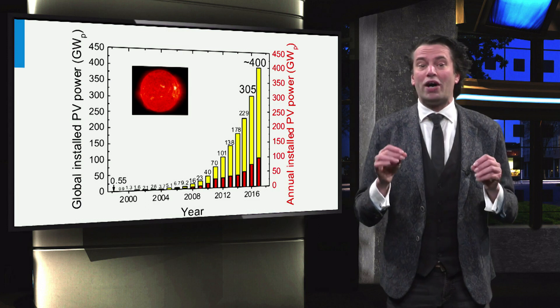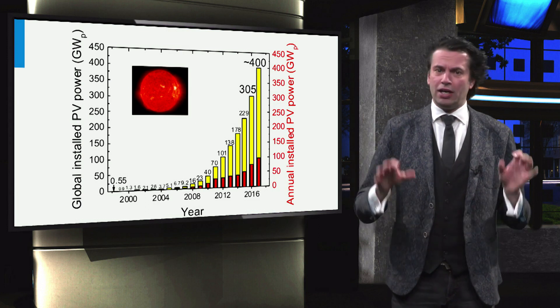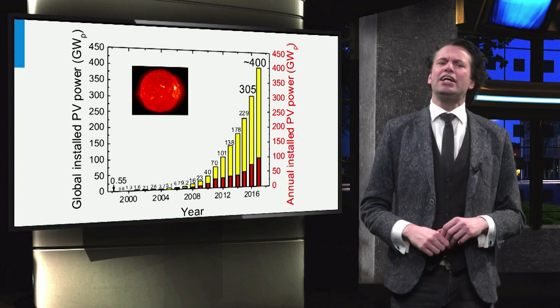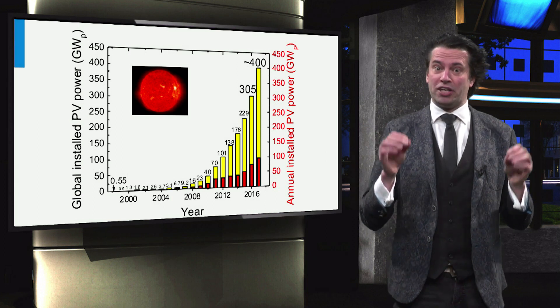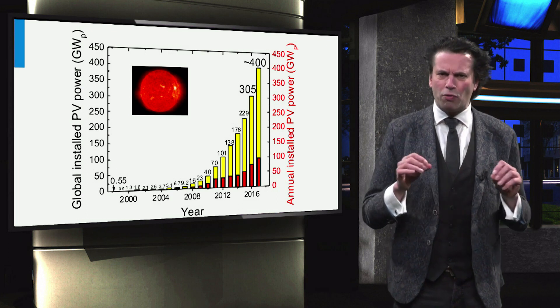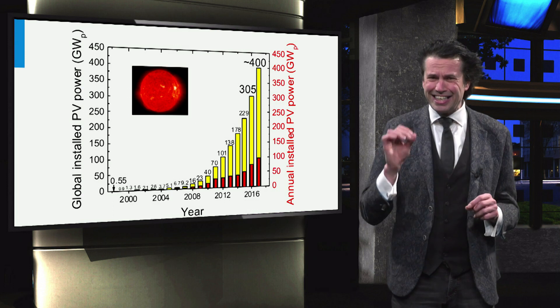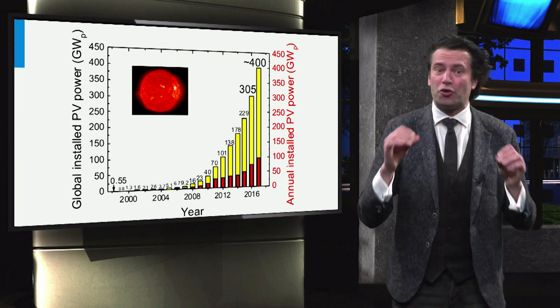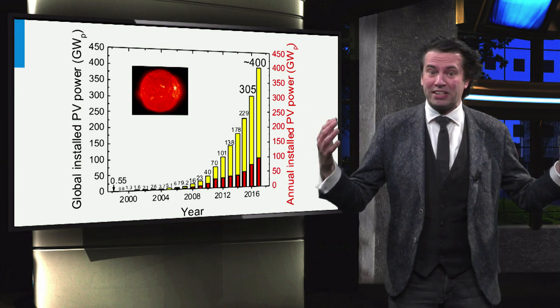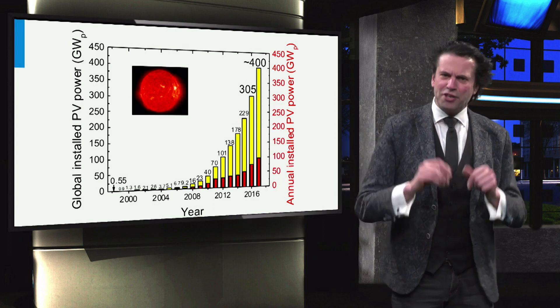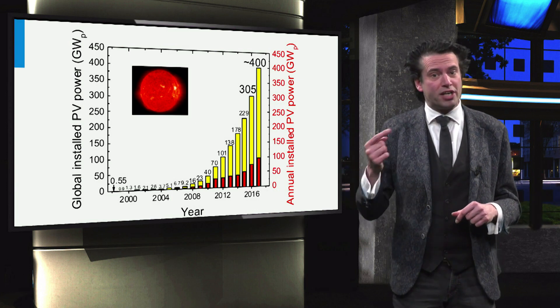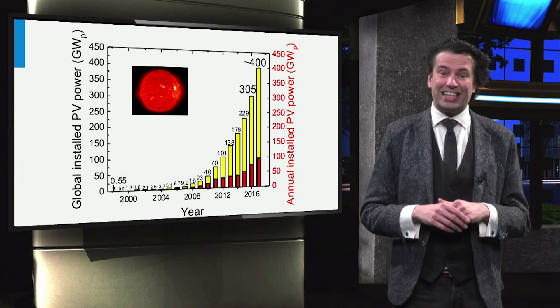The red bars indicate the worldwide annual solar cell production. The red vertical axis represents the annual production. As you can see, the annual production capacity had an exponential increase as well. Last year, a production capacity close to 100 gigawatt peak was established, equal to 25% of the current cumulative installed capacity. So every year 25% of the total installed capacity is being added. The annual relative increase in production capacity increased by more than 40% every year, which is an unprecedented growth.